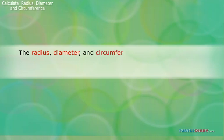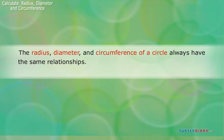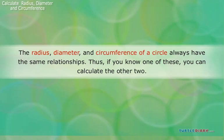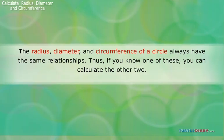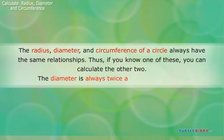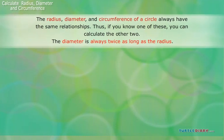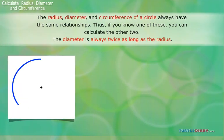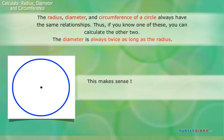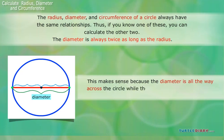The radius, diameter, and circumference of a circle always have the same relationships. Thus, if you know one of these, you can calculate the other two. The diameter is always twice as long as the radius. This makes sense because the diameter is all the way across the circle, while the radius is only halfway across.